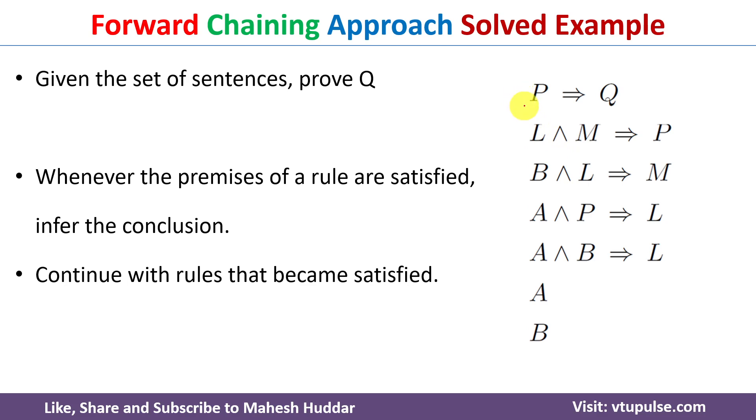In this case, we have been given some set of sentences. Given these sentences, we need to prove Q here. So what are the sentences given to us? P implies Q, L and M implies P, and so on.